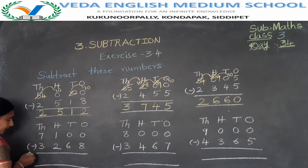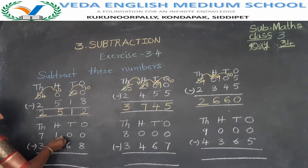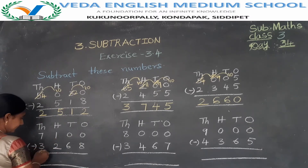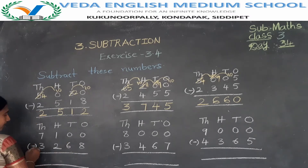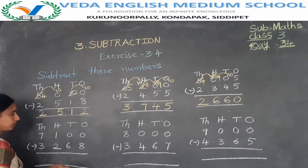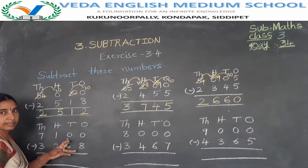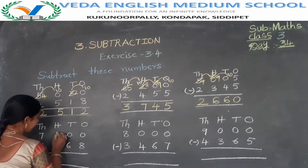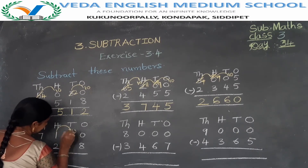Next problem: 7100 minus 3260. In the ones place: 0 minus 0. In the tens place also 0 minus 6 is not possible. In the hundreds place also 0. So take a borrow from the 100th place to the 10th place.